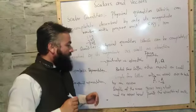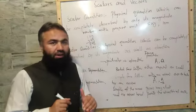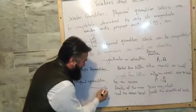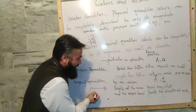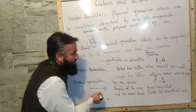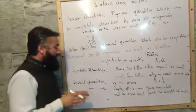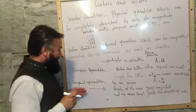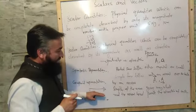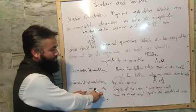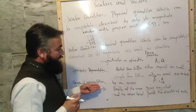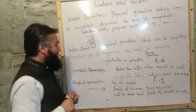If you want to use graphical representation, we represent a vector by an arrow. The length of the arrow shows its magnitude, and the arrowhead points the direction of the vector.